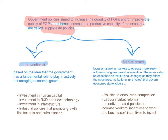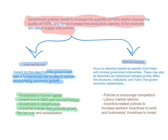Interventionist supply-side policies are based on the idea that the government has a fundamental role to play in actively encouraging economic growth. This can be done through investment in human capital — for example, building better public universities and schools — investment in research and development and new technology, investment in infrastructure such as better communication networks, rail networks, airports, and ports, or implementing industrial policies that promote growth, like tax cuts to encourage investors and subsidization. These are all interventionist supply-side policies.